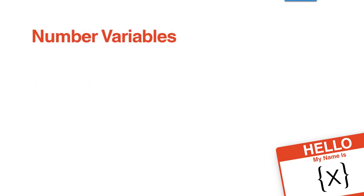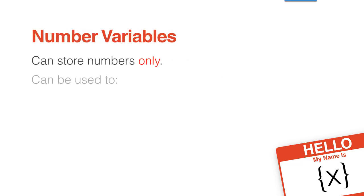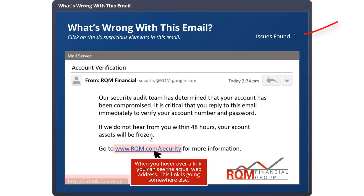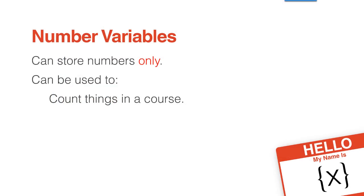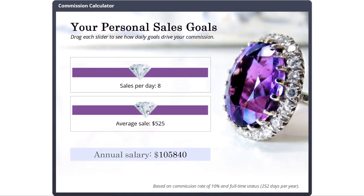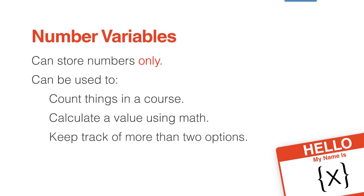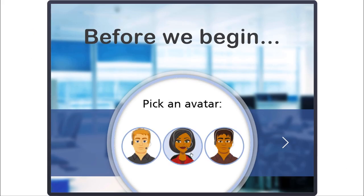A number variable stores numbers — not very surprising. You might use these variables if you want to count something, like how many mistakes a student finds in a picture. If you want to do math, such as calculating sales totals multiplied by the commission rate. Or if you want to keep track of several options, such as letting the learner pick avatar number one, number two, or number three.